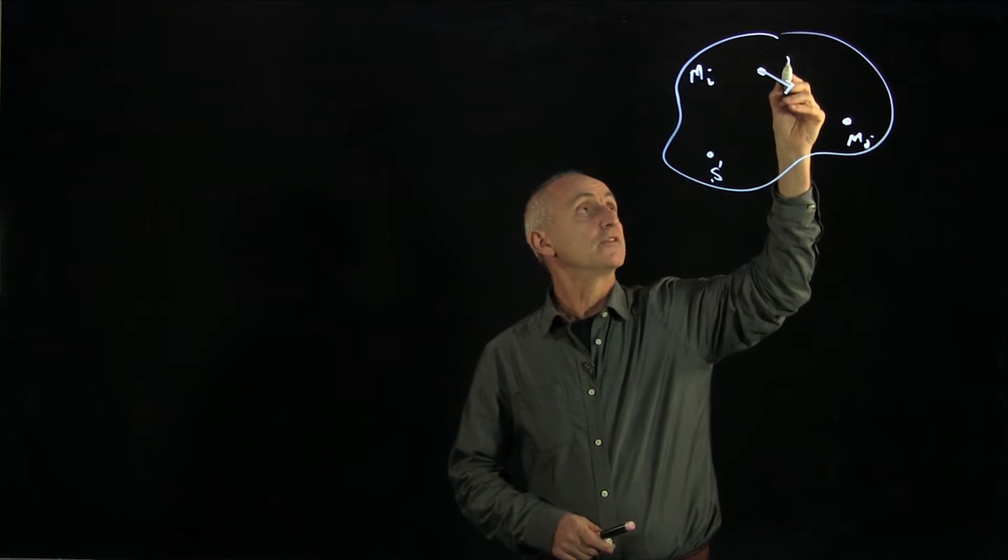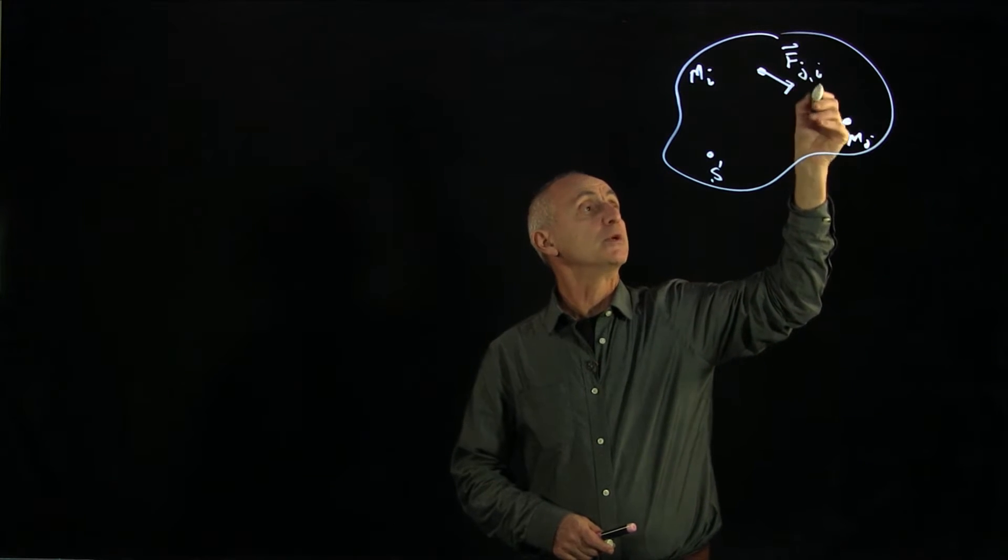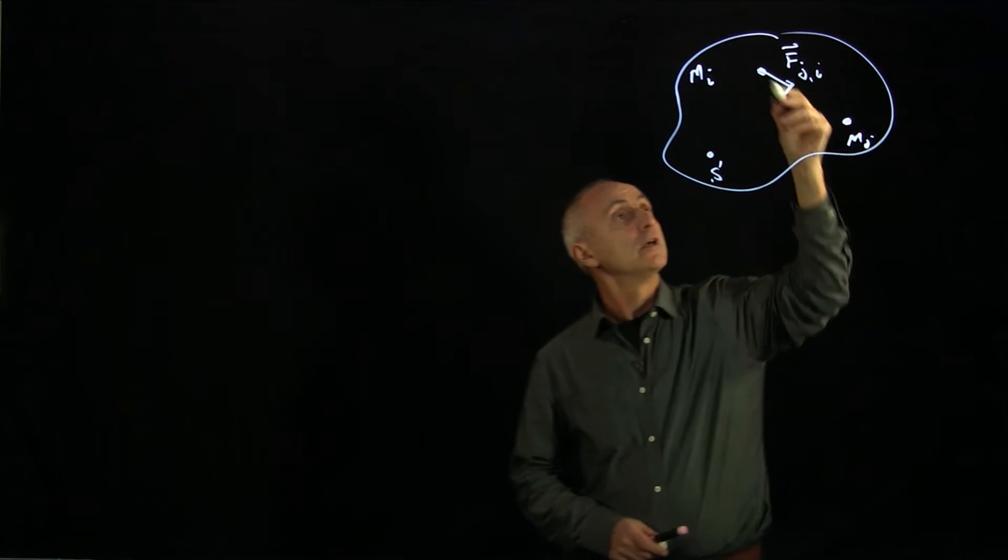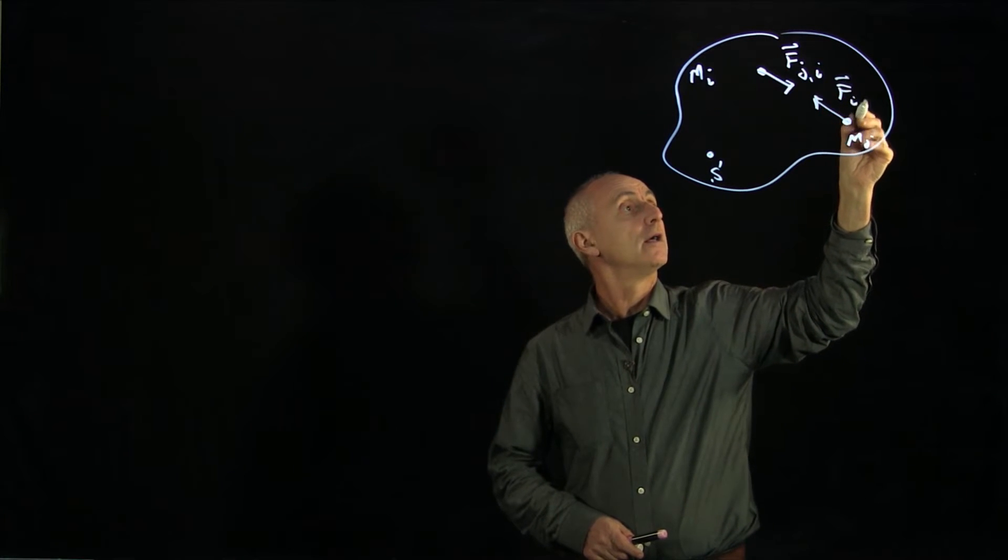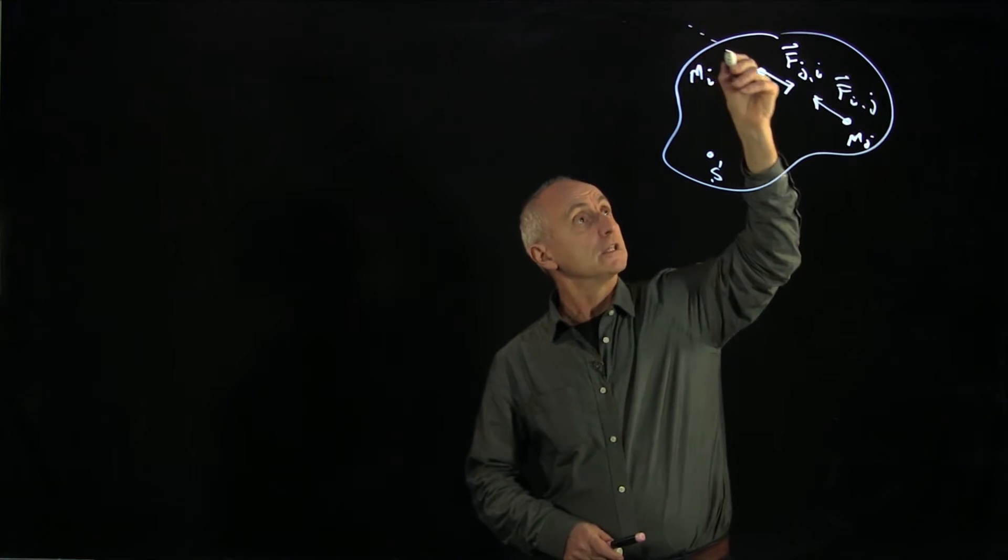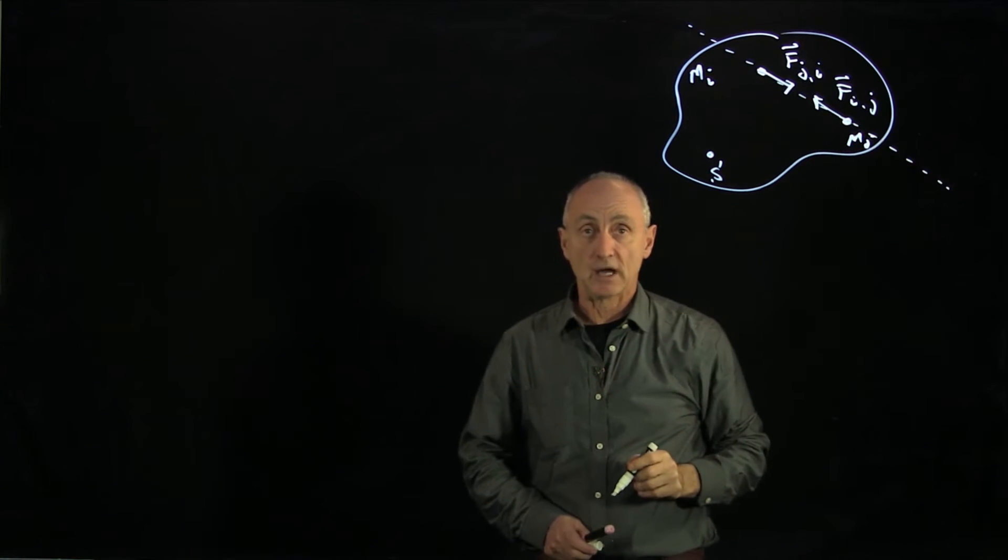Let's make the assumption, and this is the key property, that the force due to this interaction between the j-th and the i-th particle, pointing that way, and here's the Newton third law pair, that these forces are directed along the line connecting the two bodies.